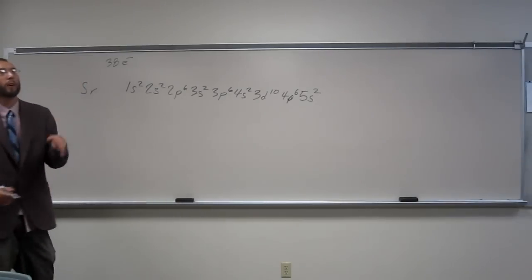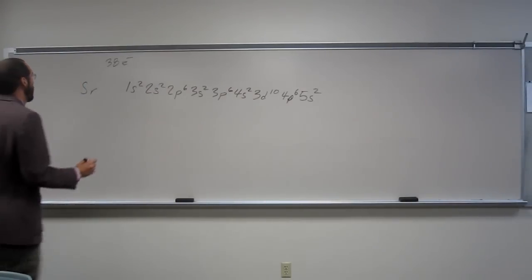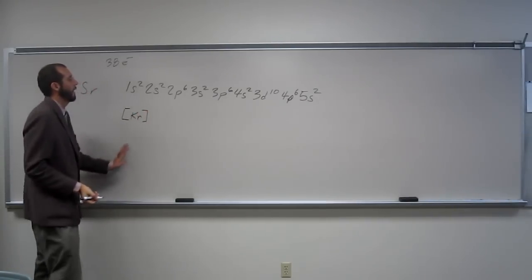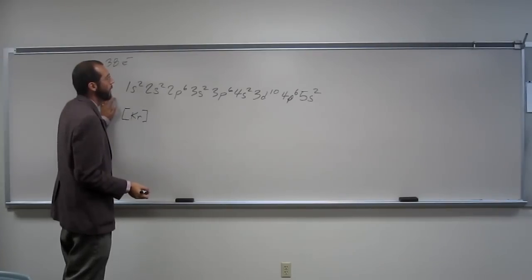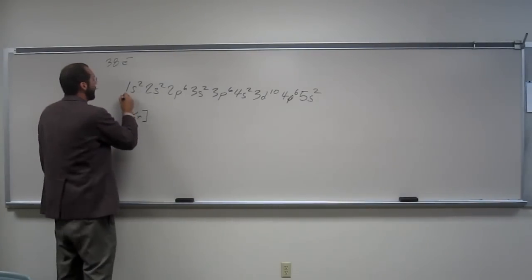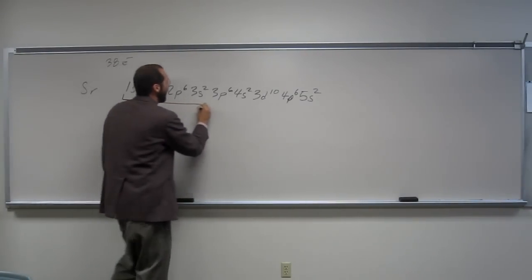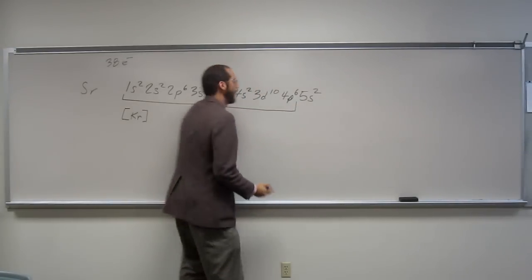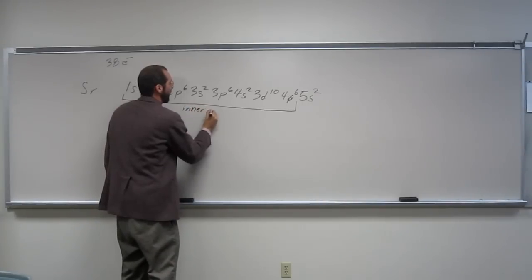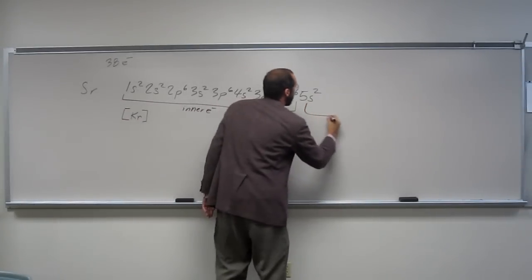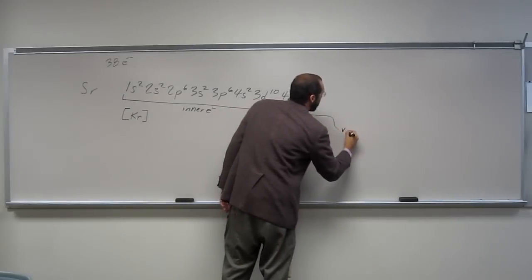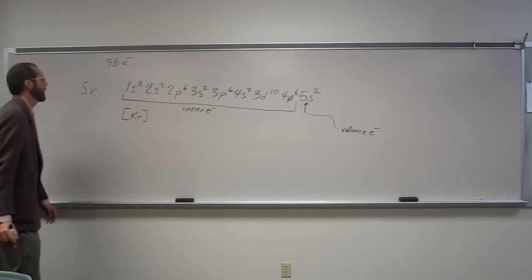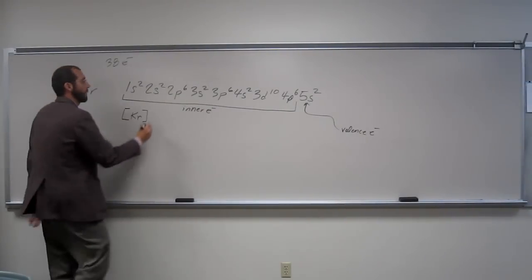What's the noble gas before strontium? Krypton. So Kr. And where are the valence electrons? All these are the inner electrons, right, until where? There. So those are all the inner electrons, and these ones here are the valence. So what do we do? Write the valence away, right?